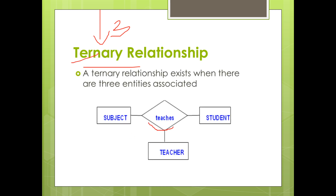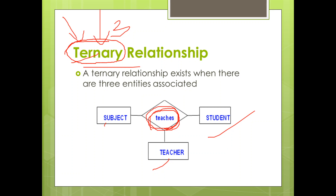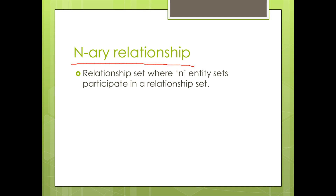An example of a ternary relationship involves three entities: teacher, subject, and student. Finally, an n-ary relationship is one where a set of n number of entities participate in the relationship.